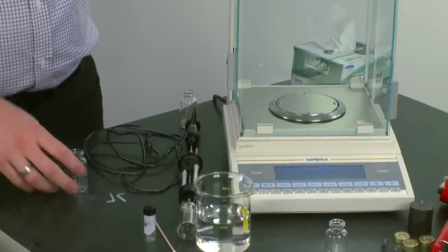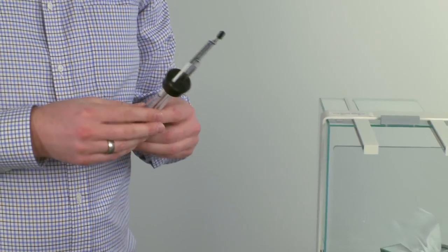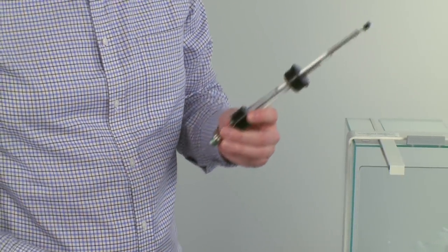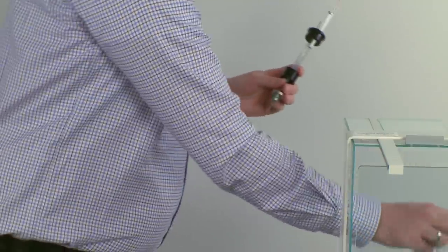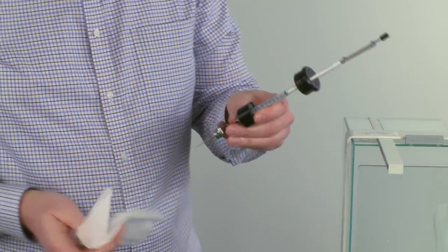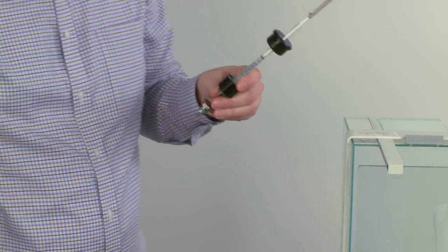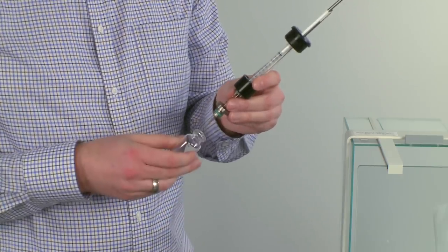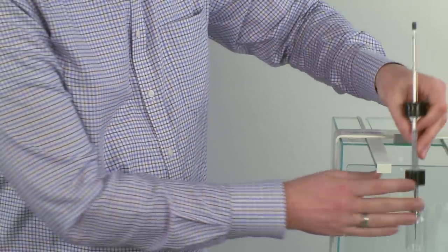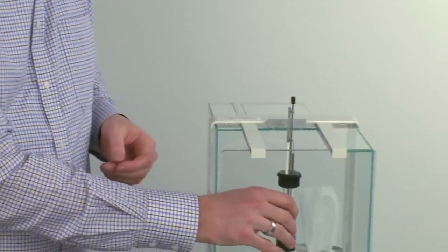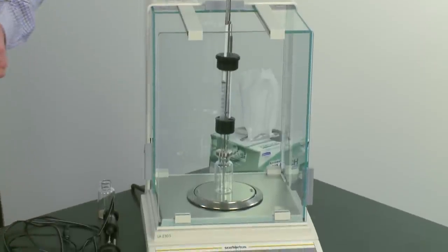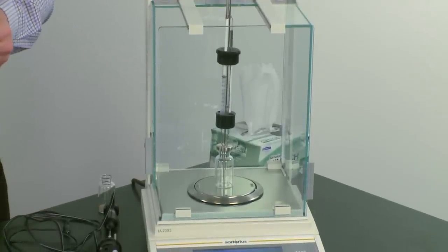To determine the precise amount of water, we'll weigh the filled AdMix again. First, wipe off the remaining water from the outside of the cannula. Then remount the ampoule and weigh the whole AdMix on the balance to know the precise mass of water you're using.